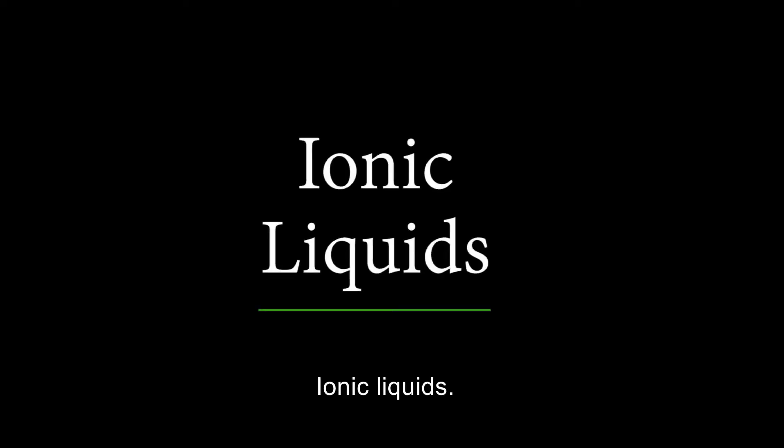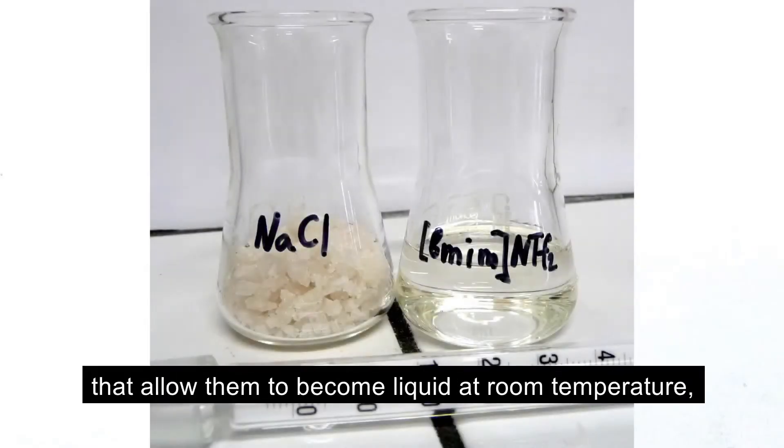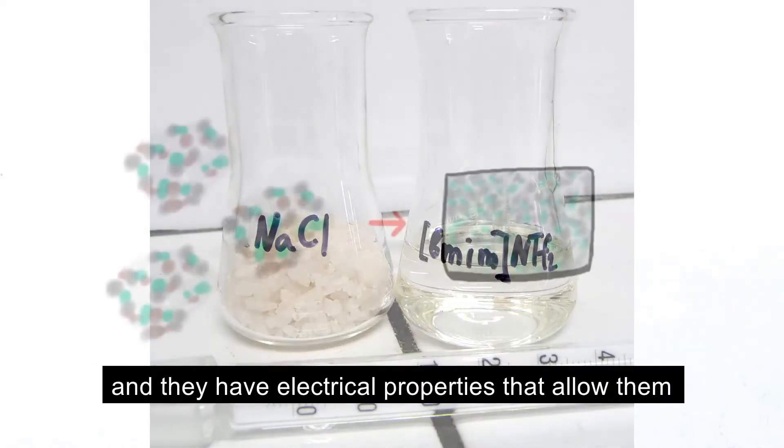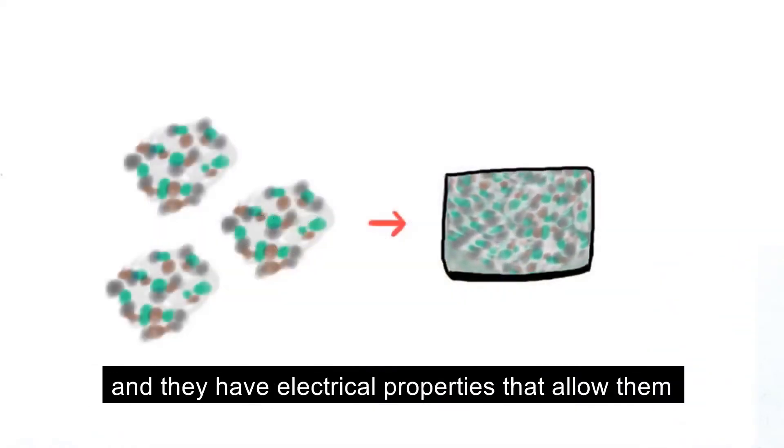Ionic liquids. Certain salts have special properties that allow them to become liquid at room temperature, and they have electrical properties that allow them to do the work of a solvent in relatively benign ways.